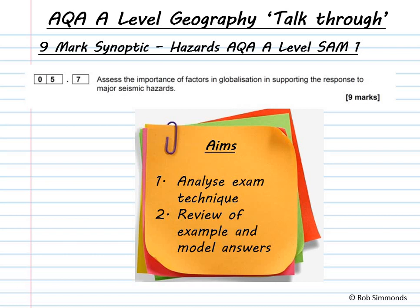Hello geographers, this is a Geography Talkthrough. Today we're going to look through a 9-mark synoptic question. This question is from the hazards section of the AQA A-level sample assessment material paper 1. The question asks: assess the importance of factors in globalisation in supporting the response to major seismic hazards.